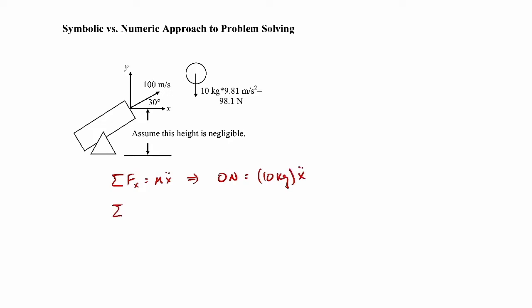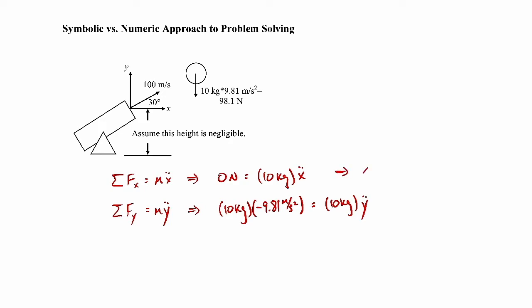We do the same in the y direction: the sum of forces in y equals mass times ÿ. The force in y is the weight, so that's 10 kg × (−9.81 m/s²) = 10 kg × ÿ. Simplifying, ẍ = 0 and ÿ = −9.81 m/s².